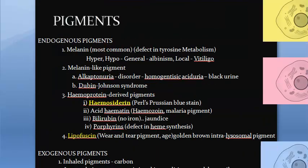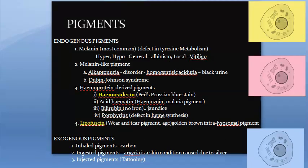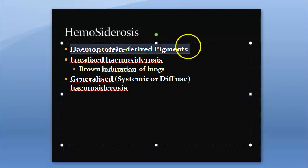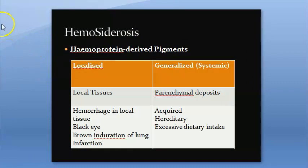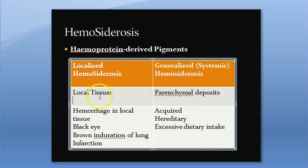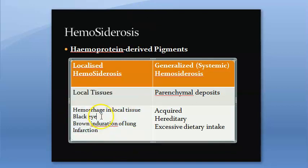Now moving on to hemosiderosis — this is important for exams. Hemosiderin is a heme protein-derived pigment coming from heme. In hemosiderosis, there is local and generalized hemosiderosis. Local hemosiderosis can occur if there is a hemorrhage in local tissue — for example, a black eye after a head injury causes periorbital hematoma, which is localized hemosiderosis. Brown induration of lung also falls under local hemosiderosis.